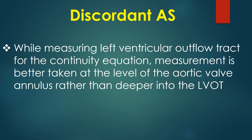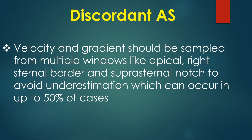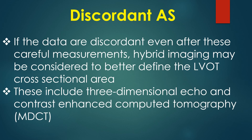While measuring the left ventricular outflow tract for the continuity equation, measurement is better taken at the level of the aortic valve annulus rather than deeper into the LVOT. Velocity and gradient should be sampled from multiple windows — apical, right sternal border and suprasternal notch — to avoid underestimation, which can occur in up to 50% of cases. If the data remain discordant after careful measurements, hybrid imaging such as three-dimensional echo and contrast-enhanced CT may be considered to better define the LVOT cross-sectional area.